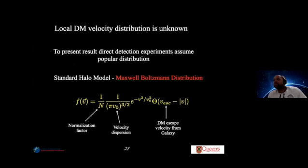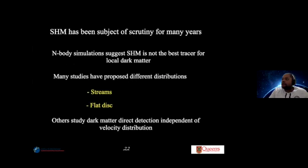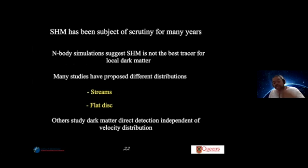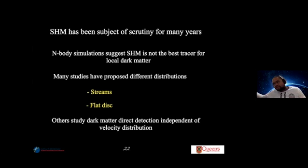For years it was assumed that the local dark matter velocity distribution is a Maxwell–Boltzmann distribution, because dark matter is non-relativistic. This is called the Standard Halo Model (SHM). However, N-body simulations suggest this may not be the best tracer for the local dark matter halo, and many alternative distributions have been proposed — including streams, a dark disk, and model-independent approaches where one infers the velocity distribution directly assuming dark matter has been found.